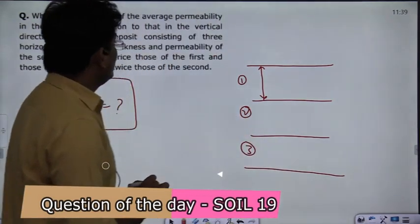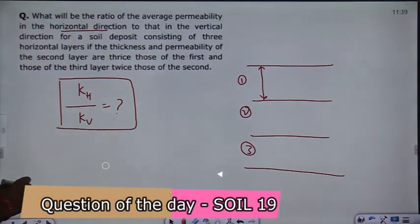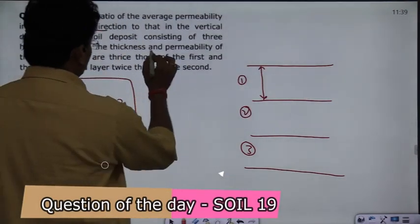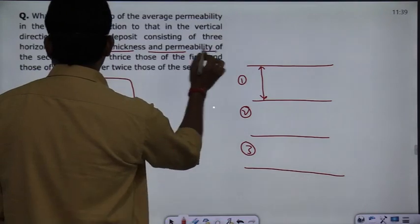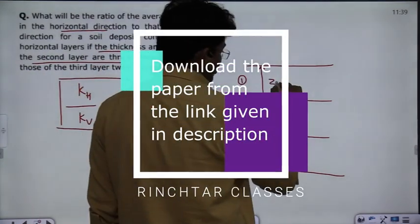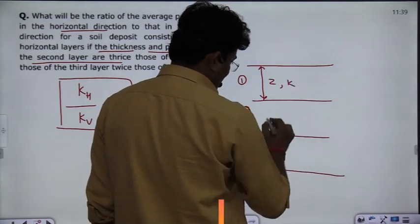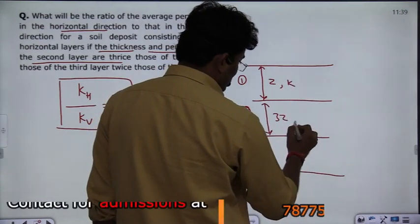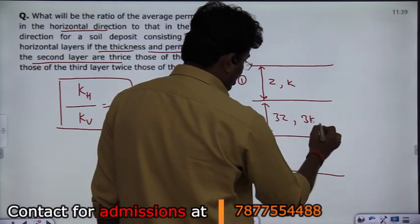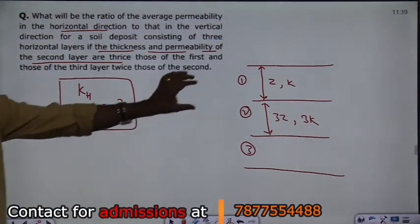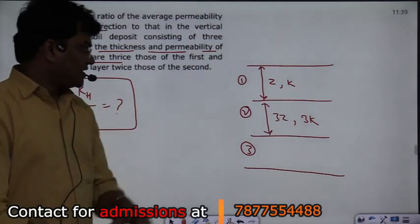If the thickness and permeability of the second layer are thrice those of the first - if the first layer has z and k, then the second layer has 3z and 3k.